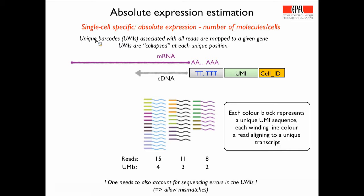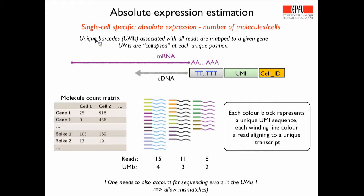Now we have a molecular count matrix based on UMIs. UMIs are great, but the problem is that some of the most routinely used standard methods for single-cell analysis, such as Smart-seq — which does full transcript analysis in single cells — do not allow you to use UMIs because they sequence from both the 5' and 3' end. We would favor only sequencing the 3' end because that allows incorporation of UMIs, but it means you will miss any splicing information since you only sequence from the 3' end.